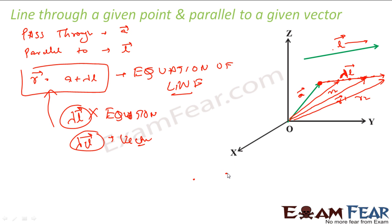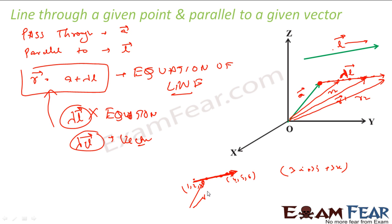For example, if this point is 1, 2, 3 and this point is 4, 5, 6, then 4 minus 1 is 3i, 5 minus 2 is 3j, and 6 minus 3 is also 3k. This is nothing but a vector that represents this line, but it is not the equation of the line, because you take any point on this line and they don't satisfy this vector alone. If I have a generic equation with R that is satisfied by all points on the line, then I call that the equation of the line. In this case, R equals A plus lambda L is the equation of line, because any R on this line satisfies this equation. Let's try to write this same line in that form.